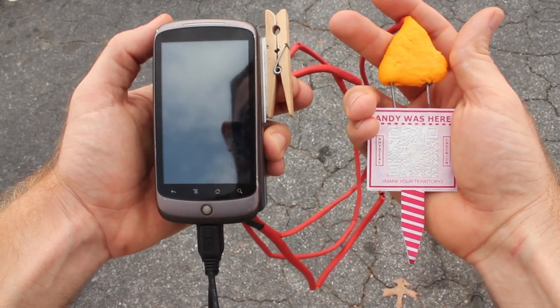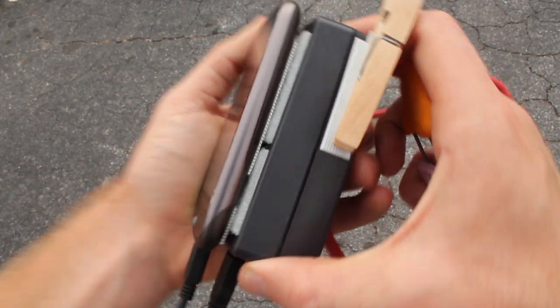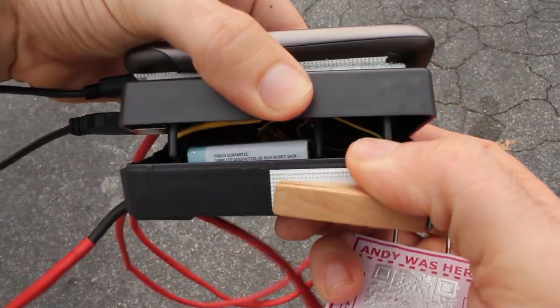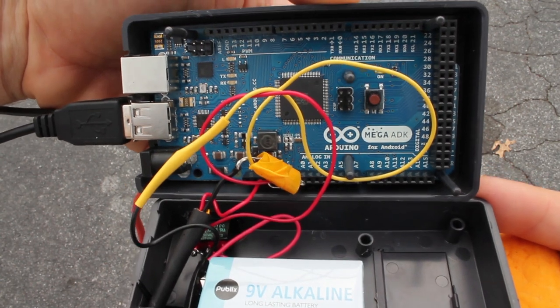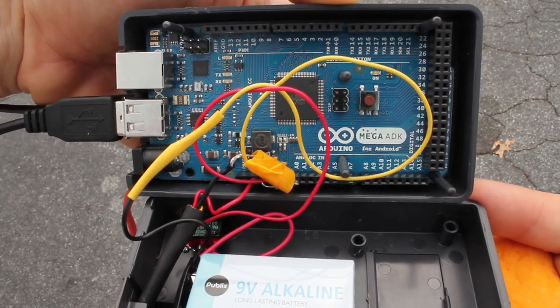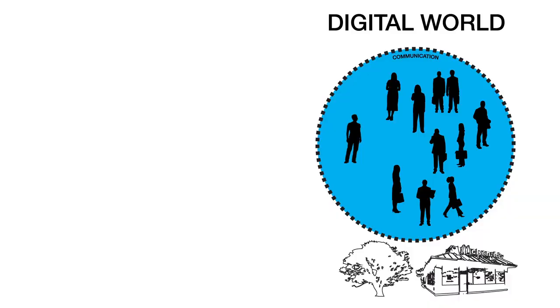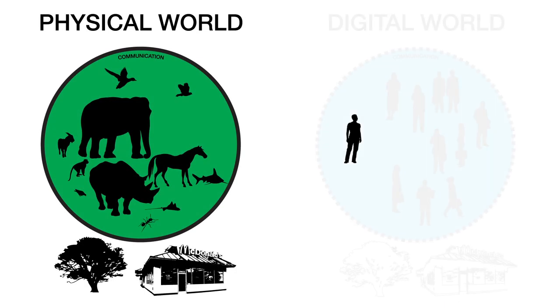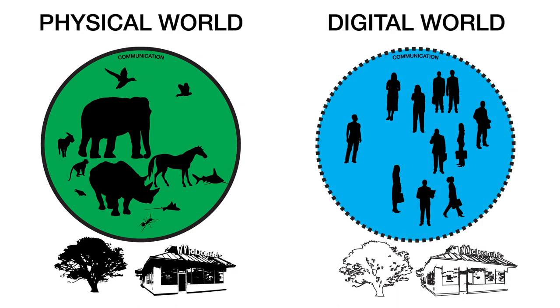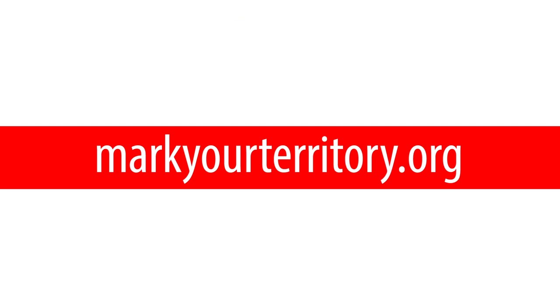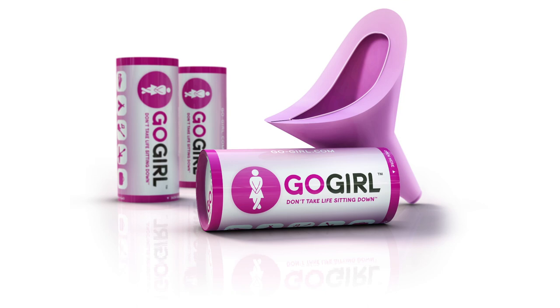On the technical side, the functionality comes from a combination of an Android app with custom firmware running on the Arduino Mega ADK — a special microcontroller compatible with Google's recently released Open Accessory Development Platform, which can link real-world sensing and manipulation to entities in the digital world through your Android smartphone. Every aspect of this project is open source, and design and code is available freely at the markyourterritory.org website. Some people worry the system is limited to only use by males, but females can also use the device via several different techniques and even with additional devices like the Go Girl.